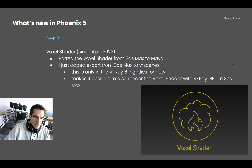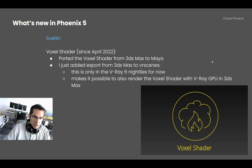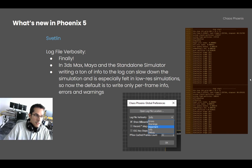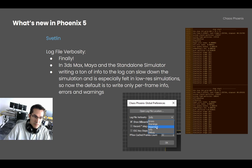The voxel shader is now available for Max and Maya — it made it into the Phoenix 5 official release. Just the other day I also added export from 3ds Max to VR Scenes, which allows rendering with V-Ray 6 GPU in Max. This is only in the V-Ray 6 nightlies and should be publicly available soon. We also now have log file verbosity control. Previously Phoenix printed a lot of data into the log, which could slow down low-res simulations. Now by default Phoenix prints much less data — just errors and warnings — but you can go into more detail if needed.